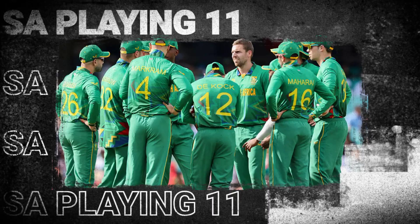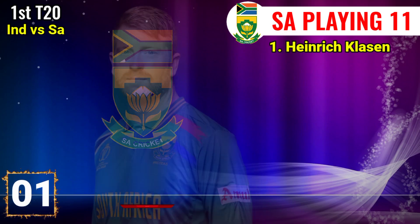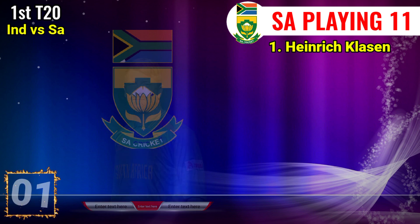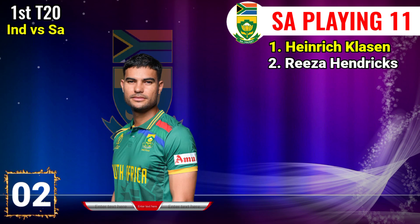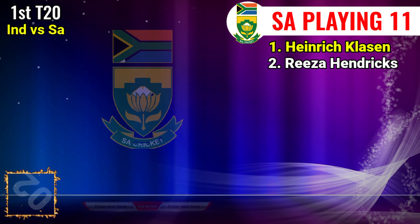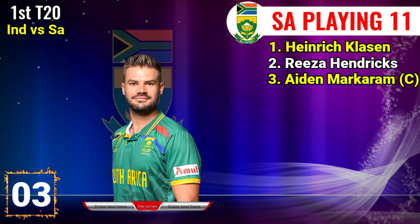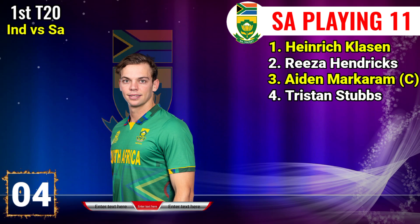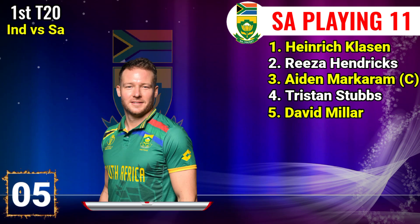Team South Africa final playing 11: Number 1 Henrik Lassen, Right Hand Batsman. Number 2 Reza Hendricks, Right Hand Batsman. Number 3 Aidan Markram, Right Hand Batsman. Number 4 Tristan Stubbs, Right Hand Batsman. Number 5 David Miller, Left Arm Batsman.